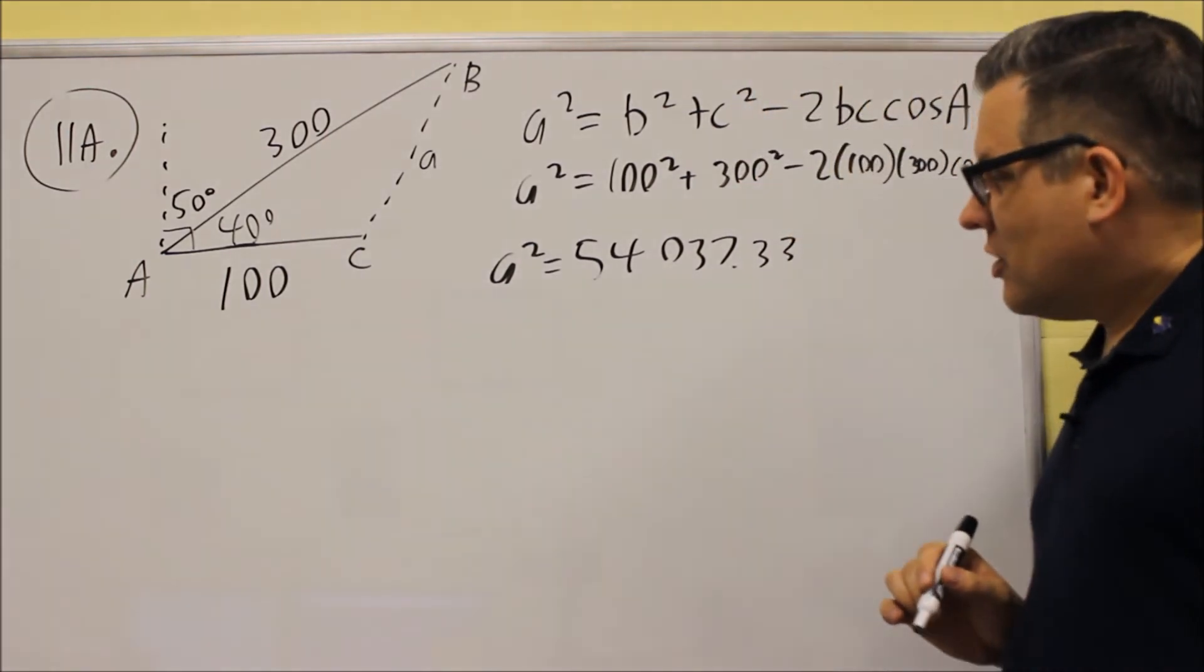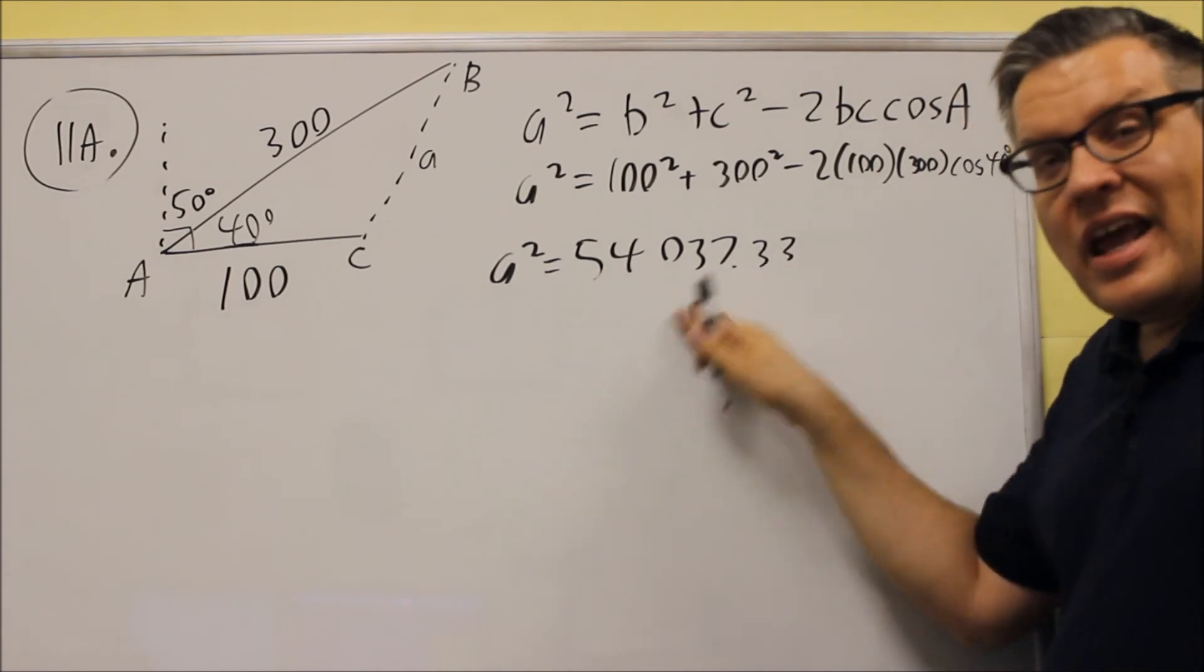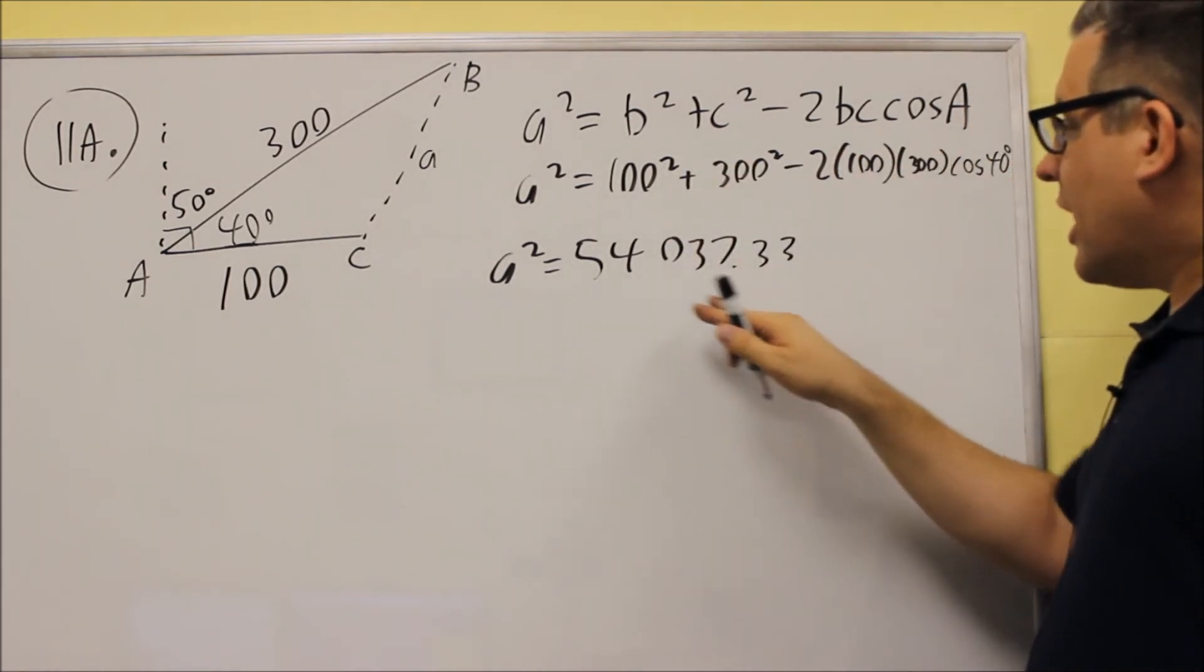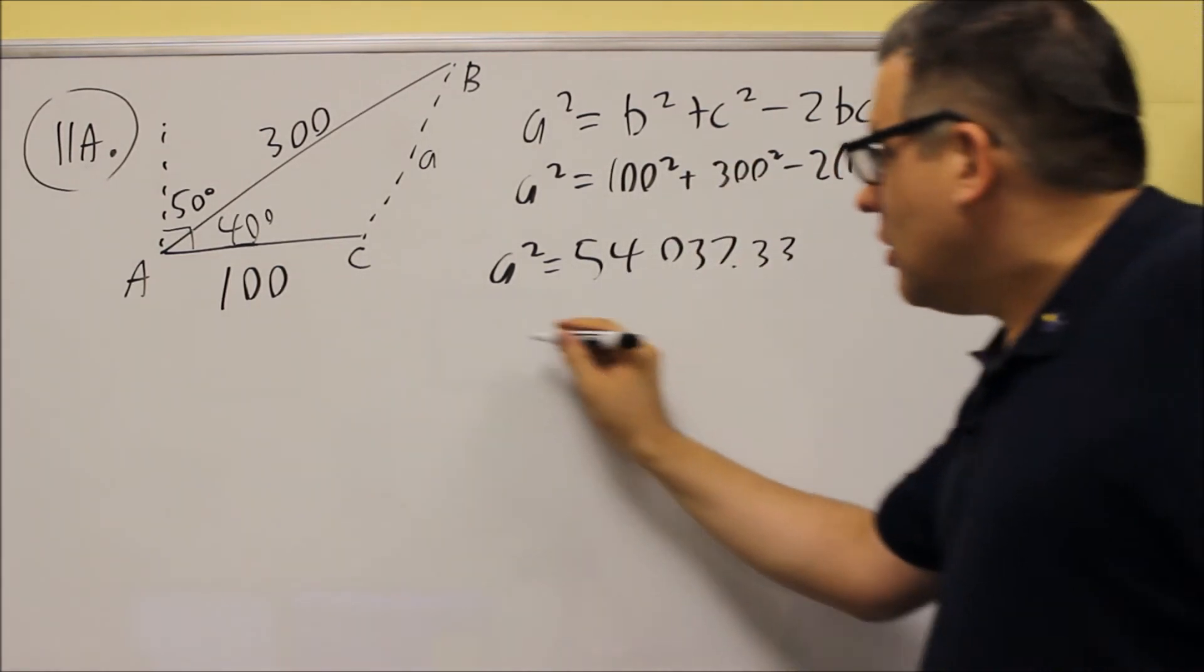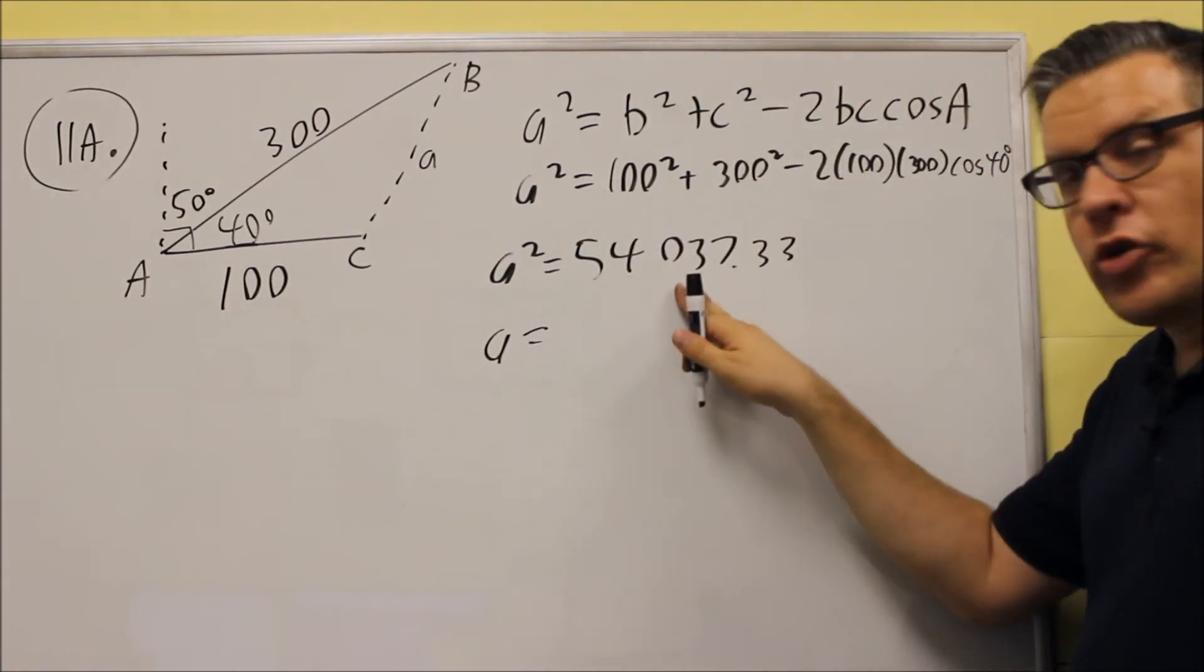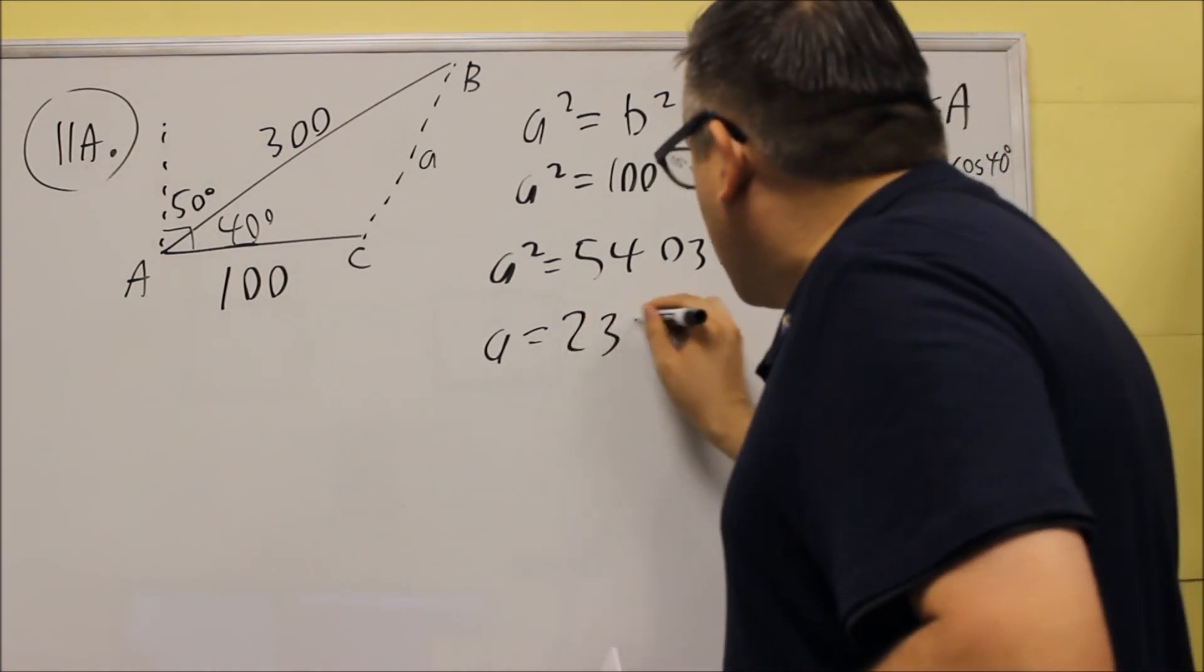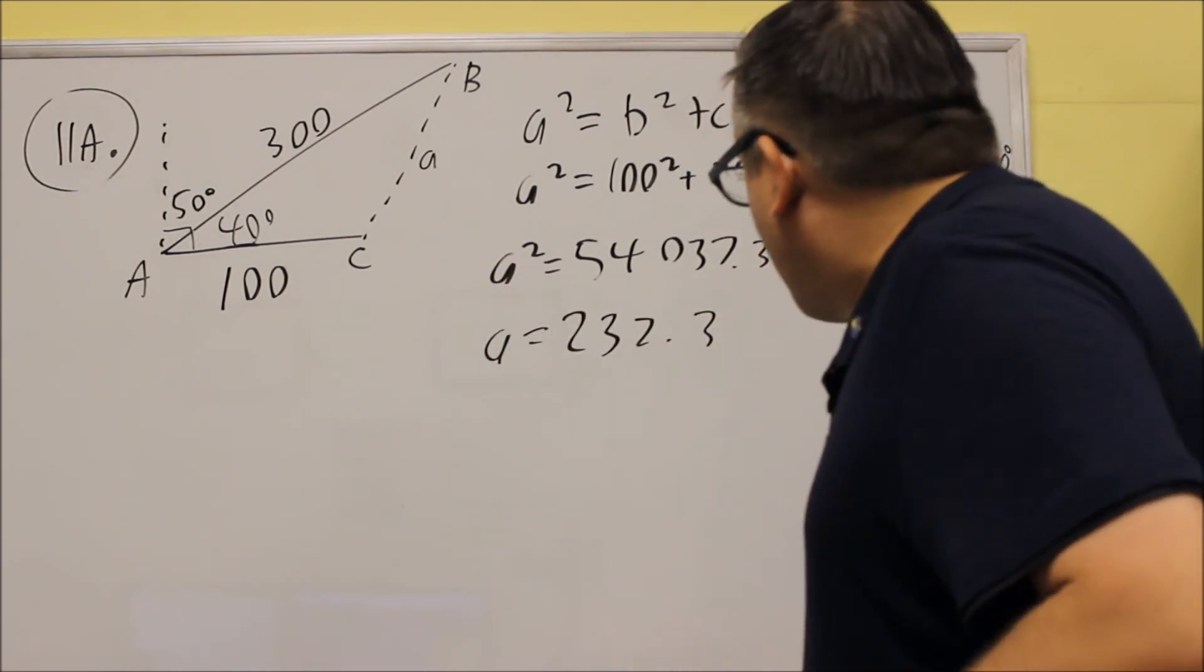This is not the answer though, because this is the answer for A squared. So if you put all that stuff in the calculator, this is only A squared. You want to solve for A by taking the square root. So you want to hit the square root button once you have that one complete. And when you do, you're going to get 232.46 miles.